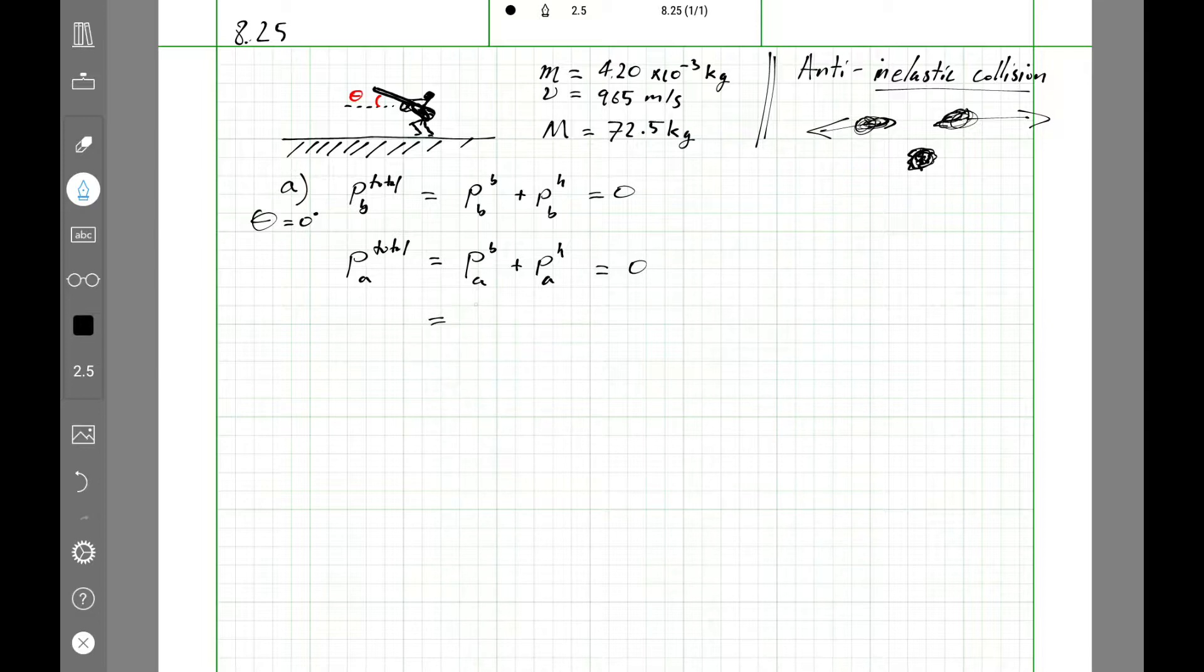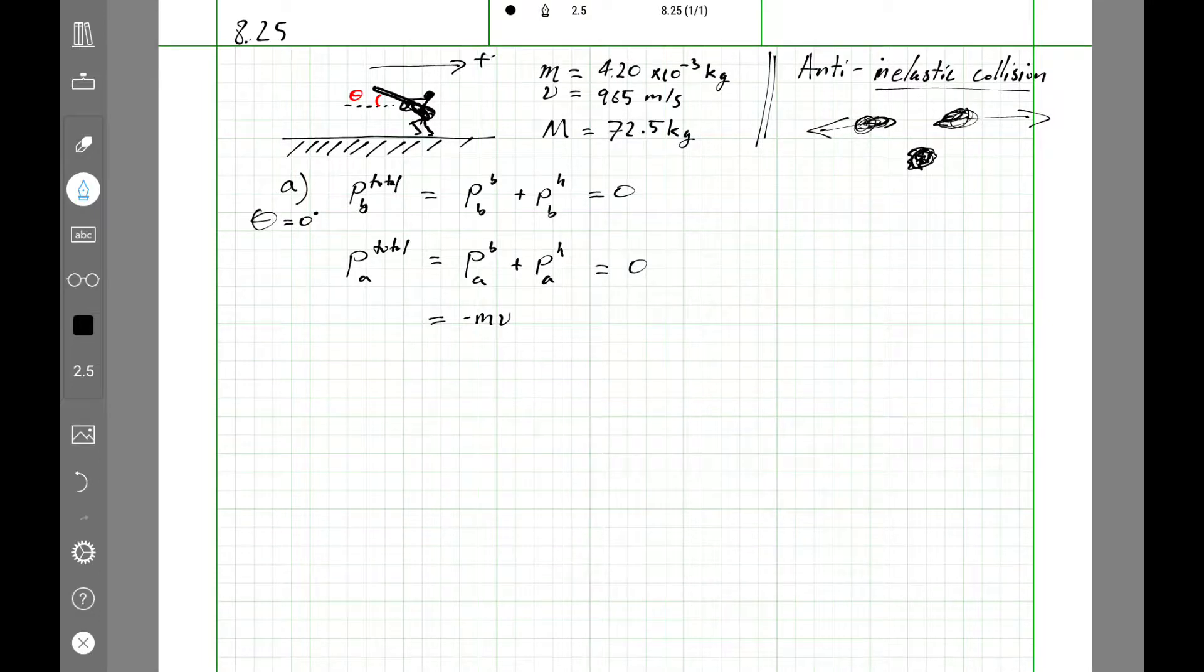Well, afterwards, what is the momentum of the bullet? It's going to be little mass times the velocity. And the way I drew it, this way is the positive x direction, the positive horizontal direction. So I'm going to have a negative for the bullet's momentum. And I expect the hunter will recoil in this direction, the positive direction. So positive M, V, where capital V is the recoil velocity I'm looking for.